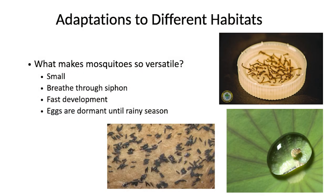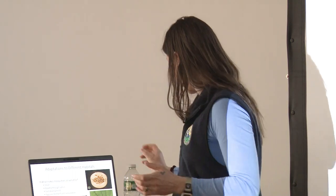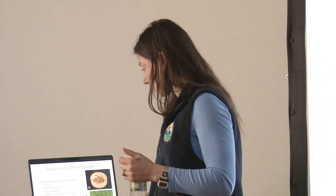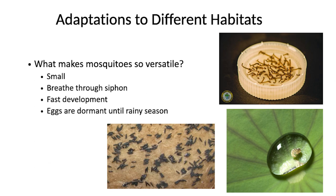They're adapted to different habitats because they're so small. This is a famous photo in the mosquito control world — a bottle cap that's full of 100 mosquitoes. It's a tiny bottle cap and it can host that many mosquitoes. This photo down here is just a drop of water on a leaf with a mosquito pupa inside. So they can really survive in a lot of different areas.